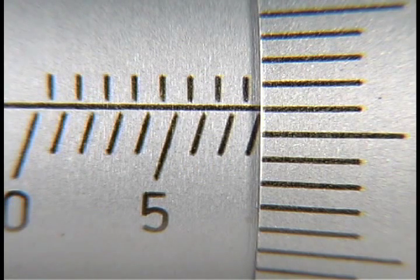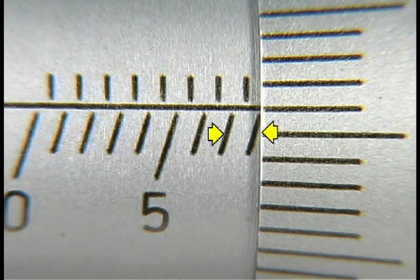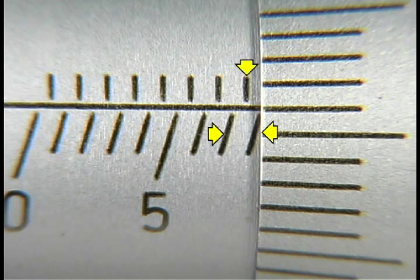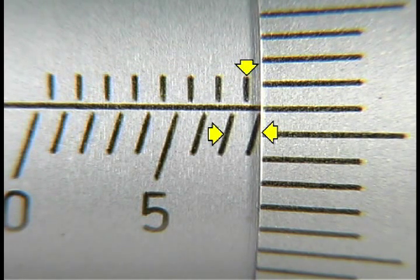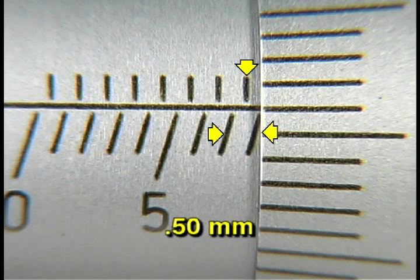Now you must look at the space between the seven and the edge of the thimble. Since you can see the graduation line between the seven and the eight millimeter marks, you now add fifty hundredths to your measurement.